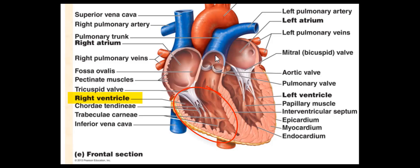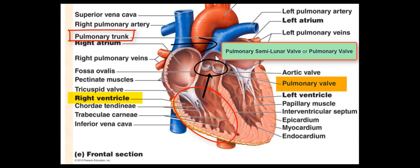Let us now focus on the right ventricle. The right ventricle receives blood from the right atrium and forms most of the anterior surface of the heart. Blood that is pumped by the right ventricle enters the pulmonary trunk, a large artery and another great vessel of the heart. As blood enters the pulmonary trunk, it passes through the third valve of the heart, called the pulmonary semilunar valve, or pulmonary valve.